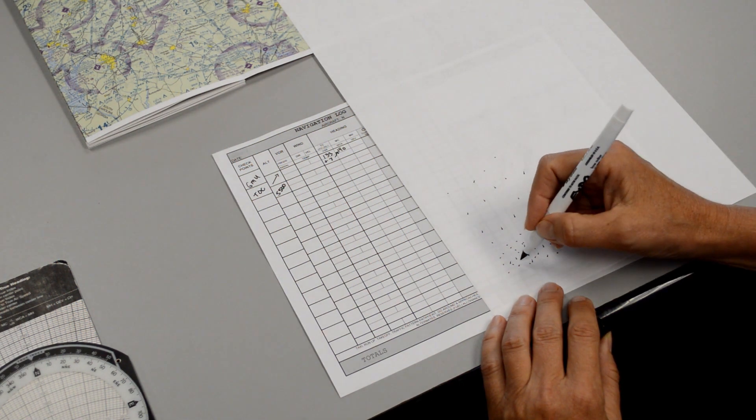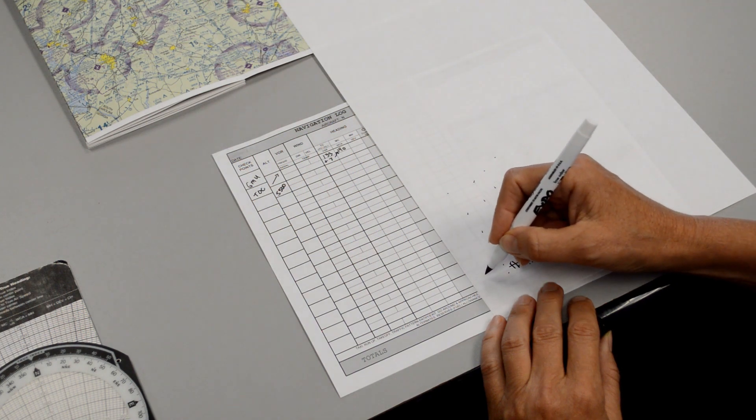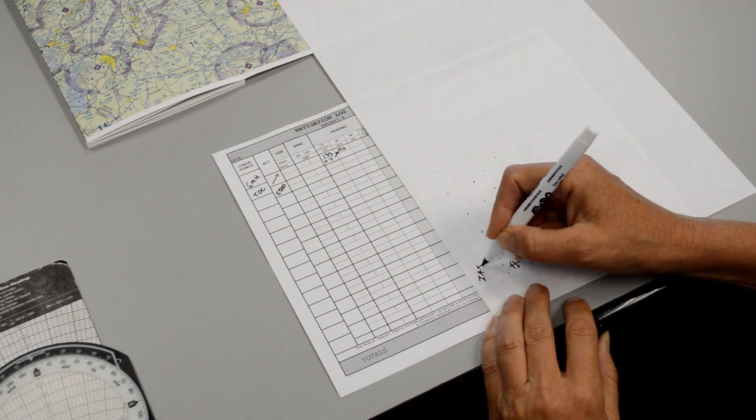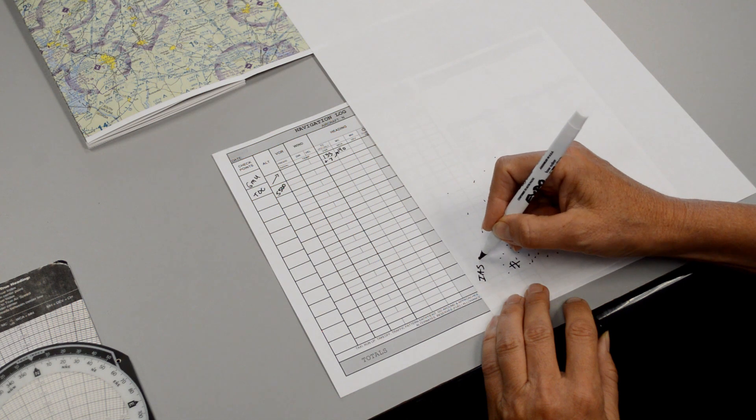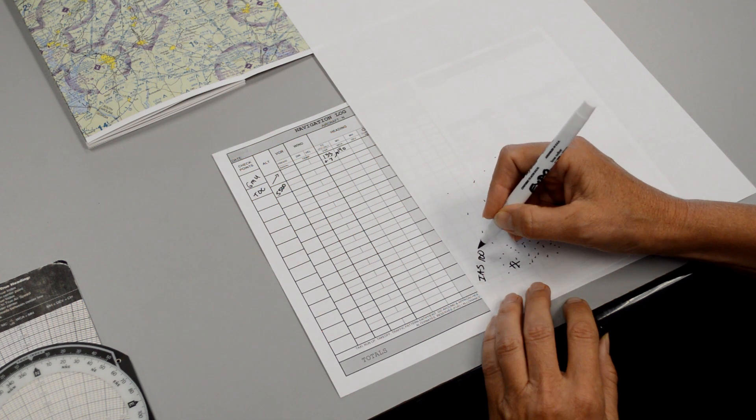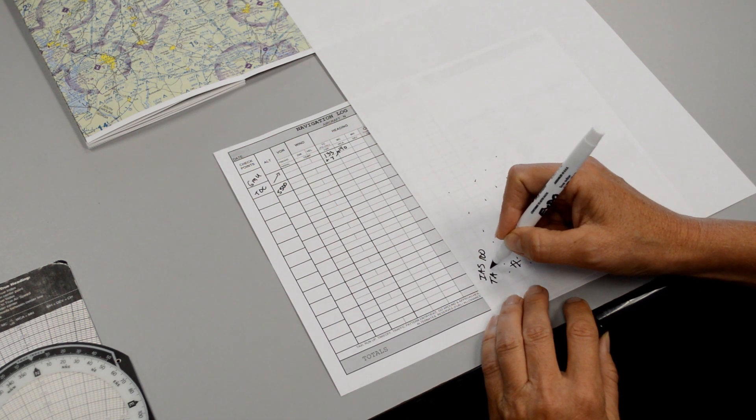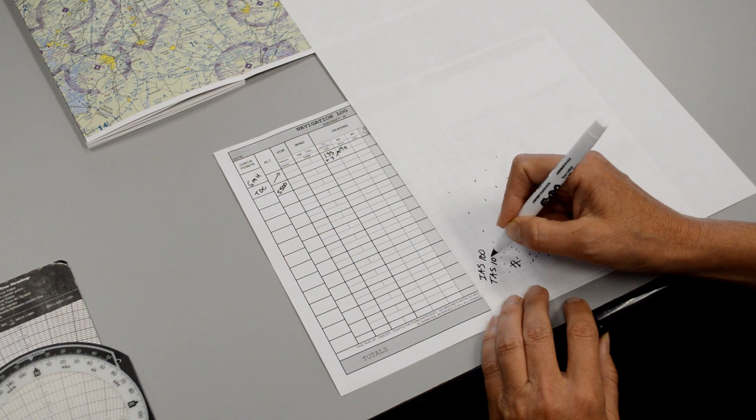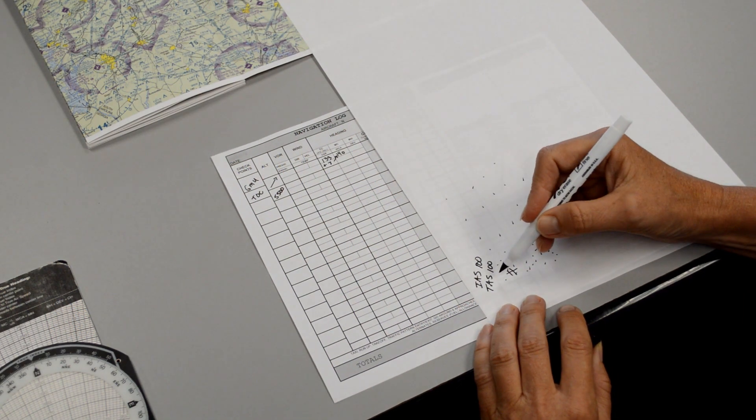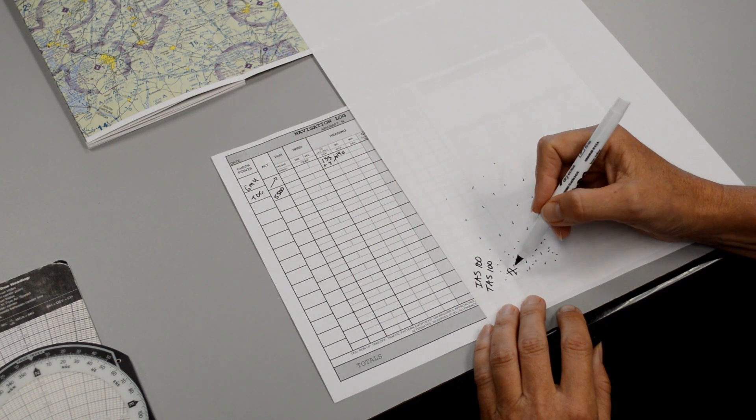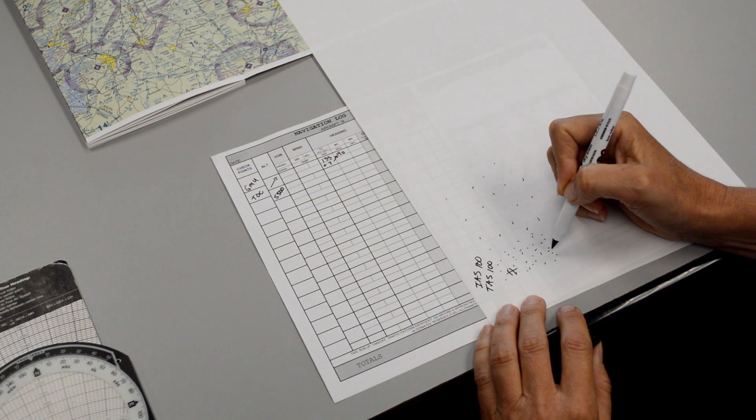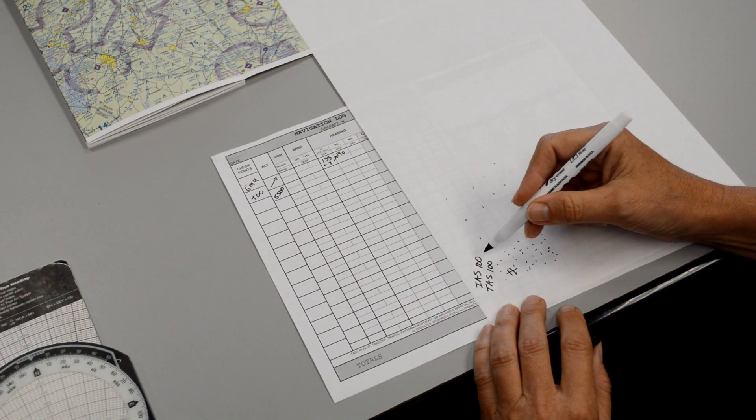So when we're flying down low, our indicated airspeed might be, say, 100. Our true airspeed will also be about 100, because true airspeed is how fast your airplane is actually flying through the air. Indicated is simply right off the dial.